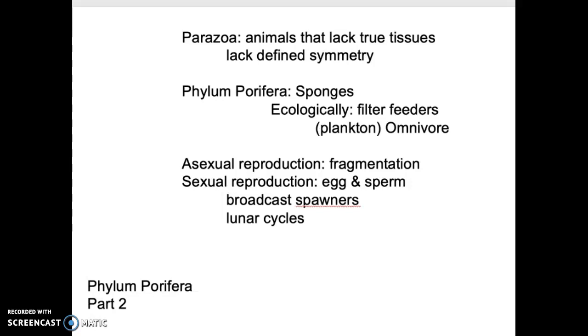Asexual reproduction is through fragmentation. Something rips them apart, whether it's a storm or a boat propeller or a predator like a turtle. And those little fragments go floating away. They settle down on a hard substrate, and they can regenerate themselves.